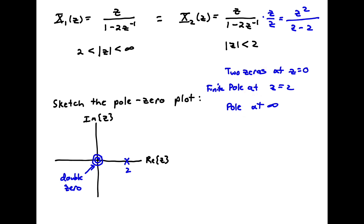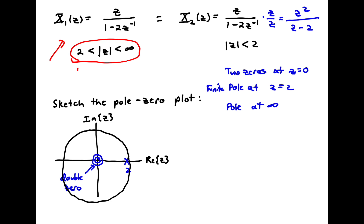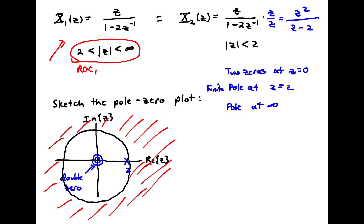We have two ROCs bounded by the finite pole at z = 2. ROC one is all the stuff outside, bounded by the pole at 2 — corresponding to |z| greater than 2. ROC two is all the stuff inside, corresponding to |z| less than 2. Note that zeros can be in the region of convergence, but poles cannot — poles bound the region of convergence, zeros can be wherever they want.